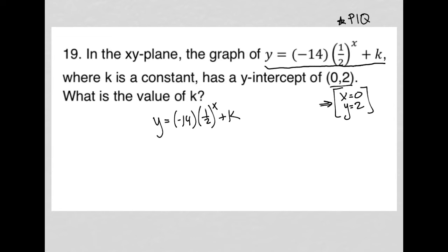I'm going to replace this x with 0, and then I know that 1 half, or really anything to the 0 power, is equal to 1, so this whole thing just becomes 1. So now what do I have? I have y equals negative 14 times 1 plus k.